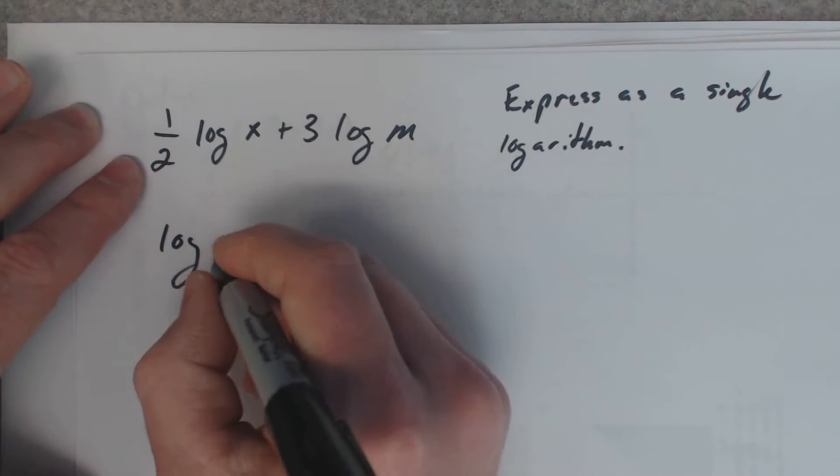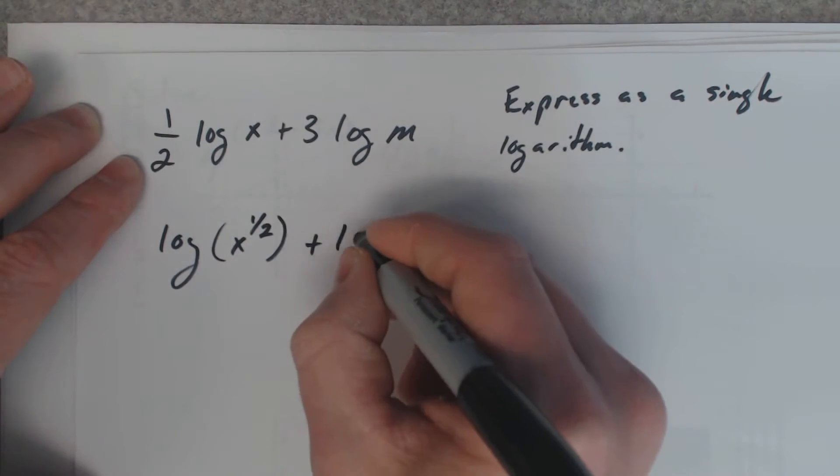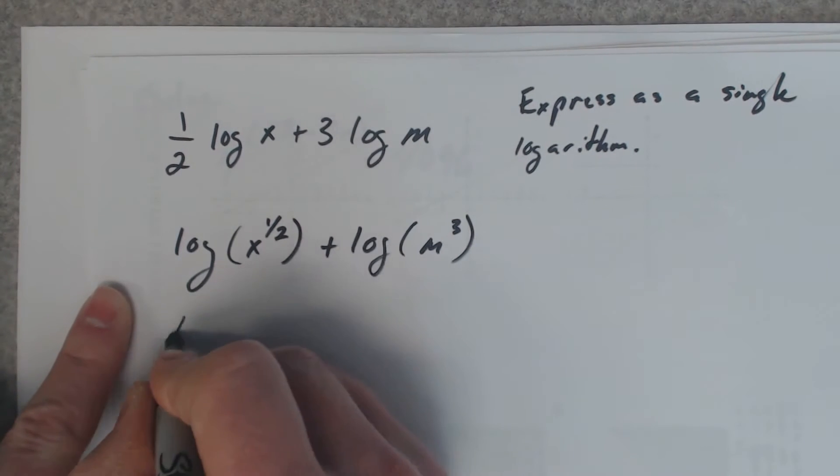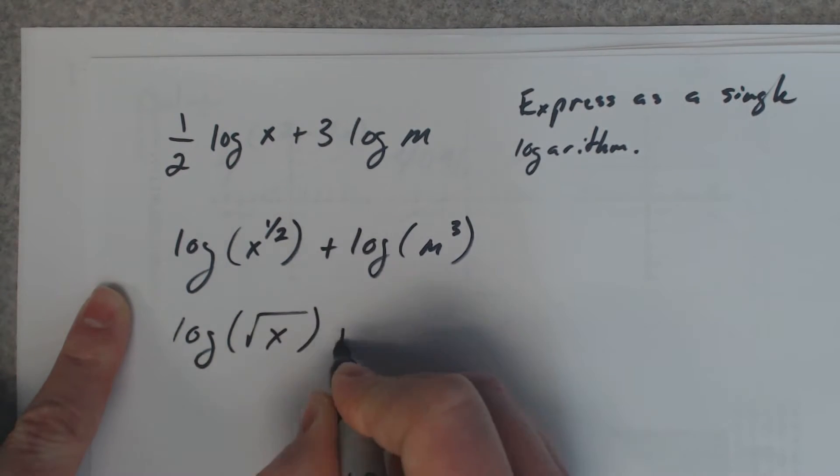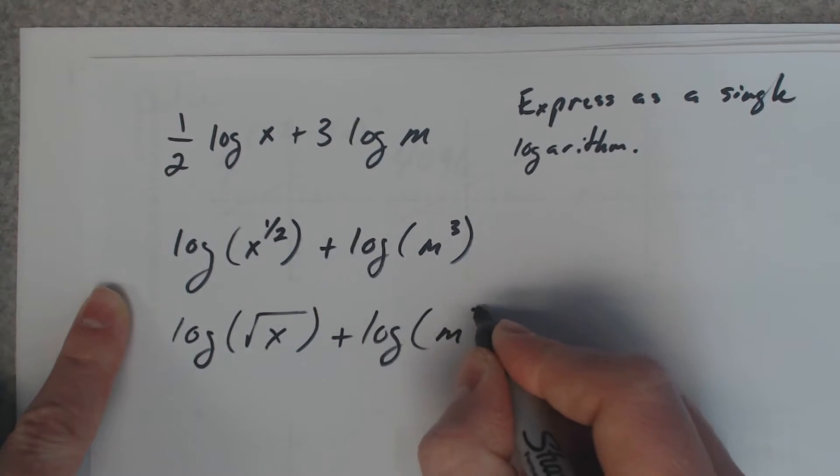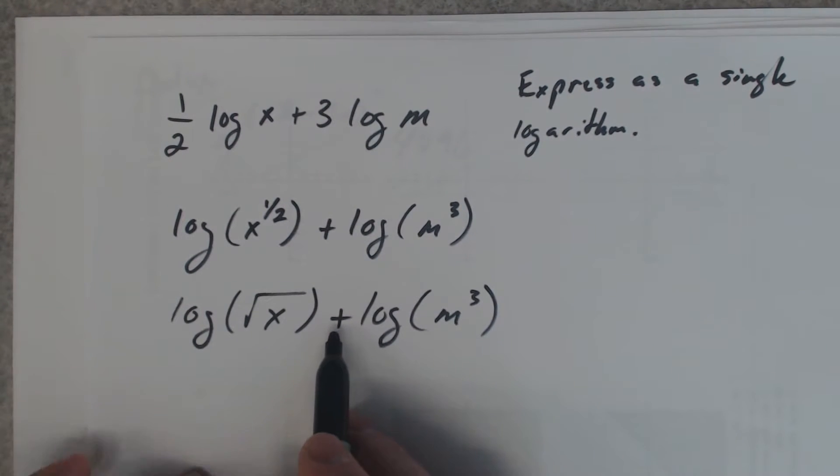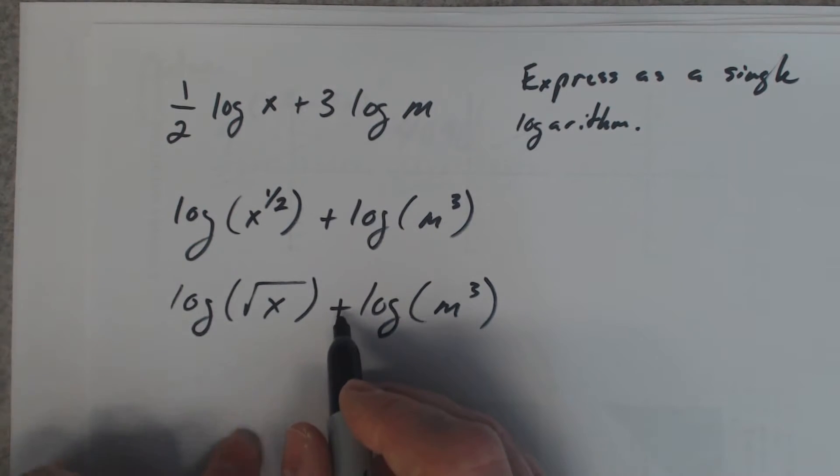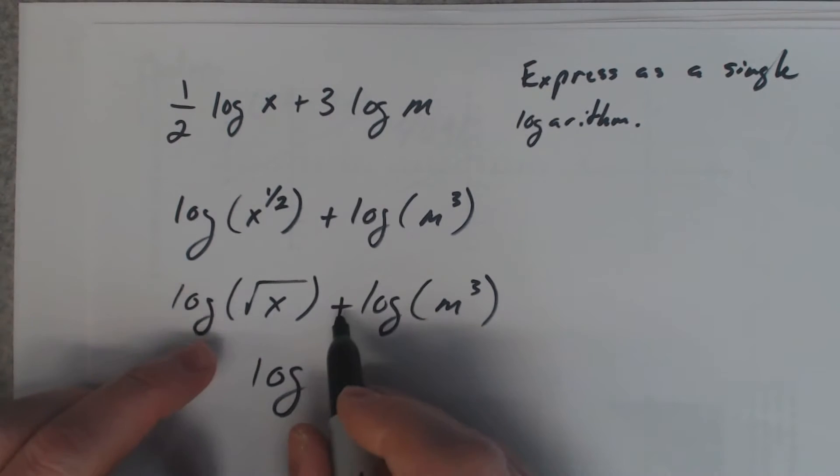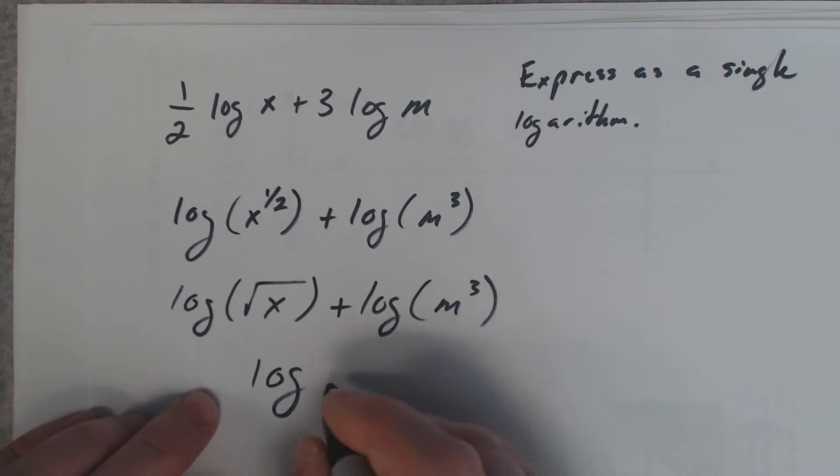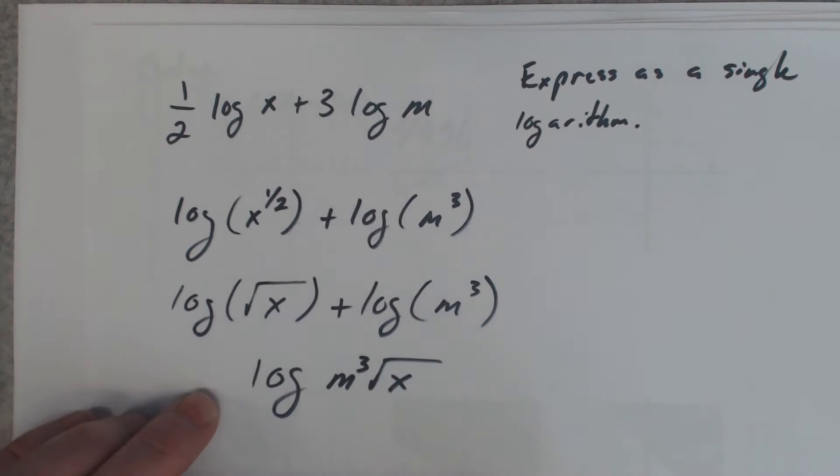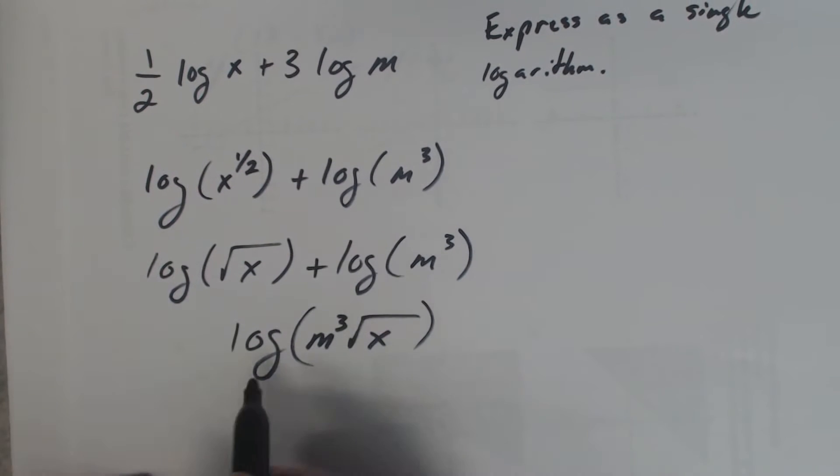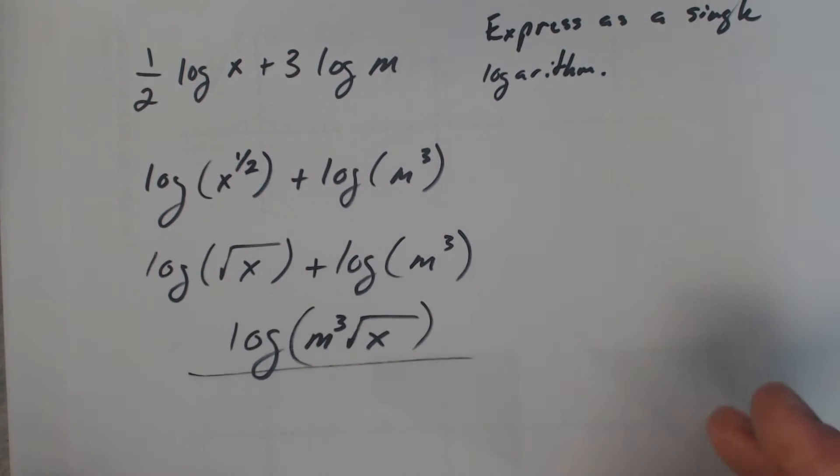This is the last question in reverse. That would be x to the one half plus log m cubed. Now a half power is the same thing as a square root. And now, remember what you do when it's a plus? That means you can rewrite it as multiplication. I split up a multiplication somewhere. So I'm going to say m cubed times the square root of x. I don't have to say times if it's right in front of the radical like that. There you go. We've got one single logarithm and I can't simplify that at all.